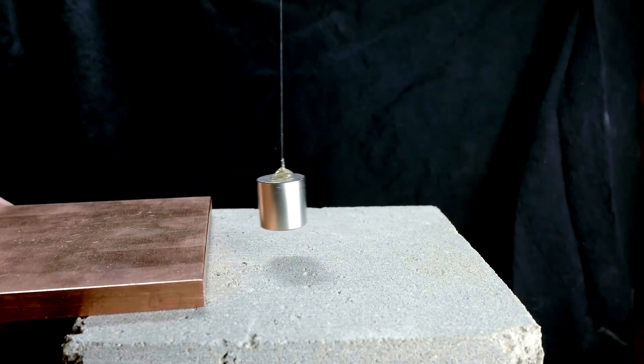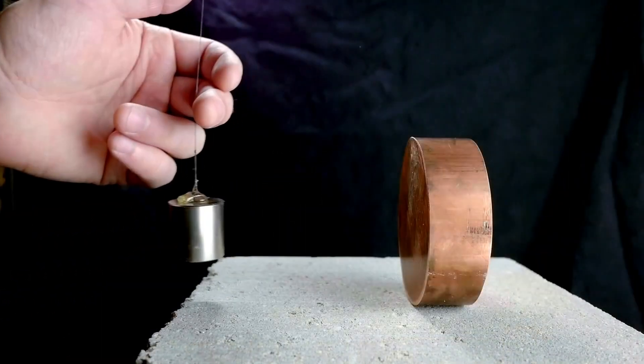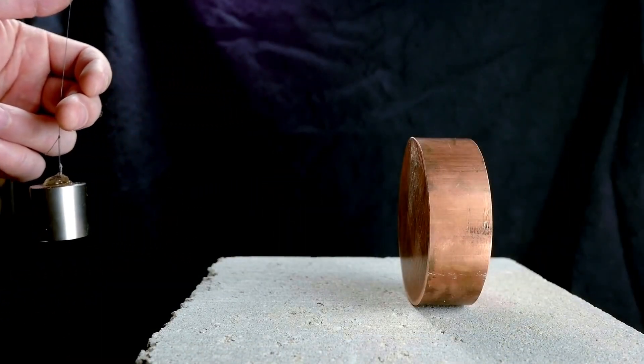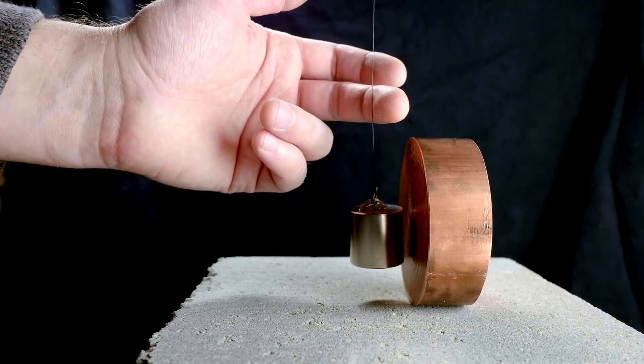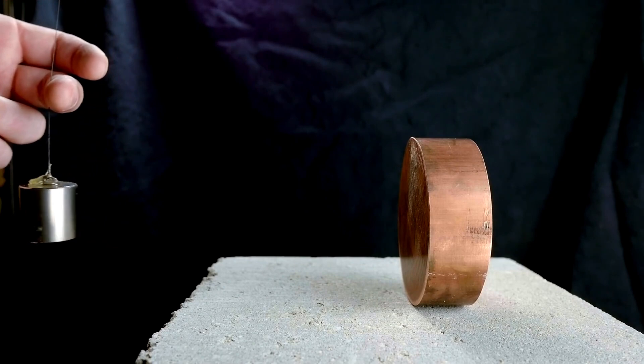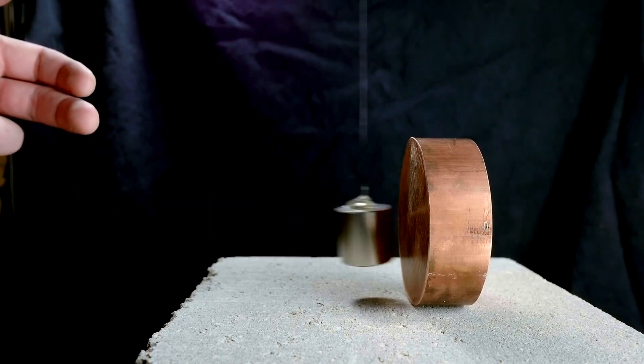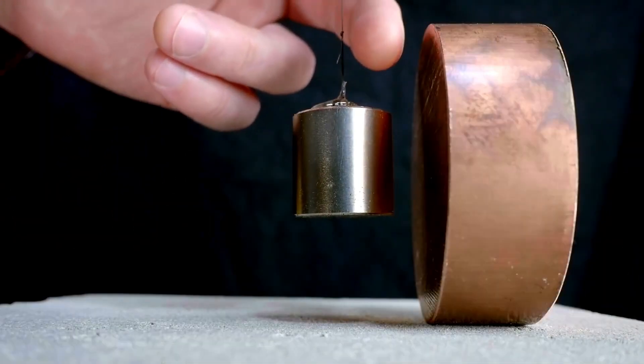My favorite tabletop demonstration of magnetic braking is to swing a magnet toward a chunk of copper like a wrecking ball. The magnet loses all of its momentum at the very last moment in a way that almost looks supernatural. It reminds me of a scene in the second Matrix movie where Neo stops bullets in mid-air.